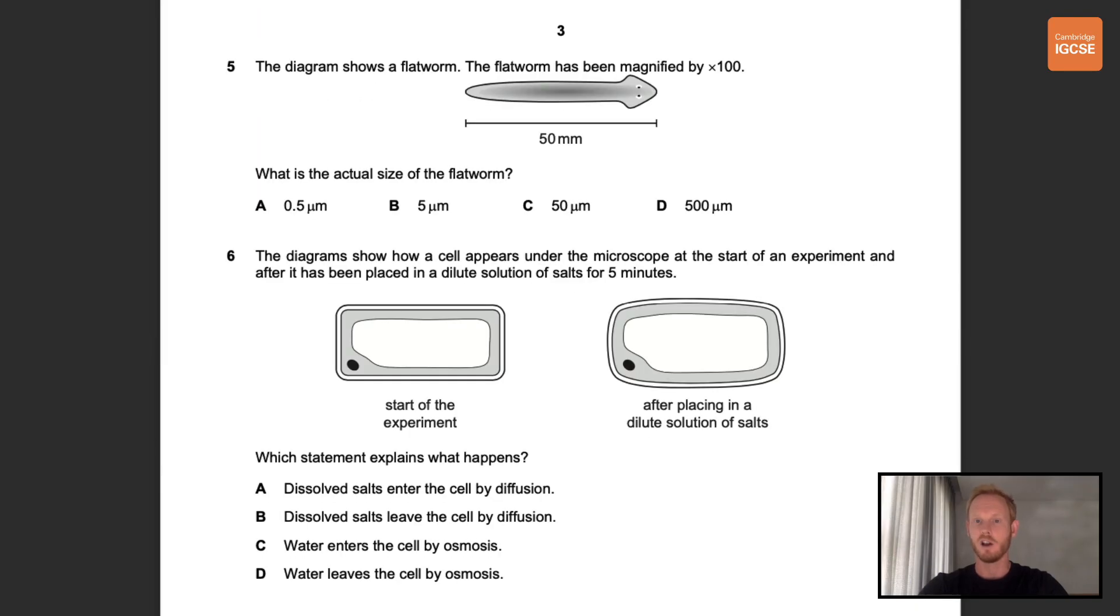Number five. The diagram shows a flatworm. The flatworm has been magnified by 100 times. What is the actual size of the flatworm? So the diagram of the flatworm has been magnified by 100 times, so to get the actual size we need to divide by 100. So 50 millimeters divided by 100 is 0.5 millimeters. However, the options given are in micrometers so we need to do a quick conversion. There are 1000 micrometers in a millimeter so 0.5 times 1000 gives us 500 micrometers. So the correct answer is D.